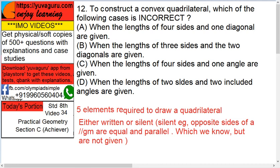When lengths of four sides and one angle is given, four plus one, five. When two lengths, when the lengths of two sides and two included angles are given, two plus two, four. D cannot be the condition. Means, you cannot draw a quadrilateral using D.